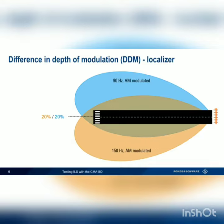For example, at this point, the modulation depth of the 150 Hz lobe has increased to 30%, and the depth of the 90 Hz lobe has decreased to 10%. And at the far right edge of the localizer pattern, we see the 150 Hz lobe at 40% AM modulation depth, with a zero modulation depth on the 90 Hz lobe.